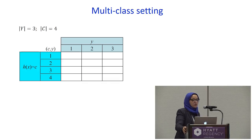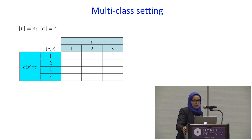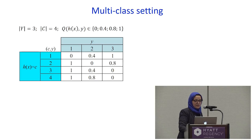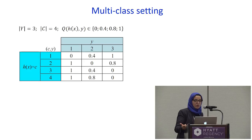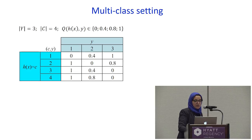In order to assess the performance of a classifier H on a random test set, it is necessary to consider all possible error cases. In this multi-class setting, we can take an example with four predicted classes and three observable classes, and also a valued loss function taking values 0, 0.4, 0.8, and 1. For example, the classifier can predict class 2 when the real class is 1, giving a cost of error of 1. But when the classifier predicts class 1 and the real class is 2, the cost is different — it is 0.4.